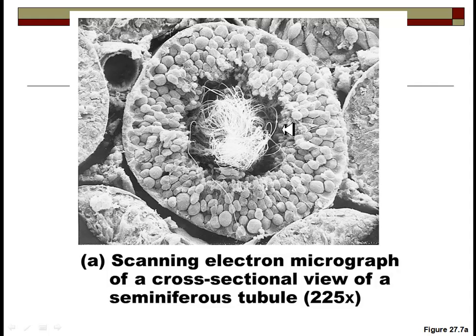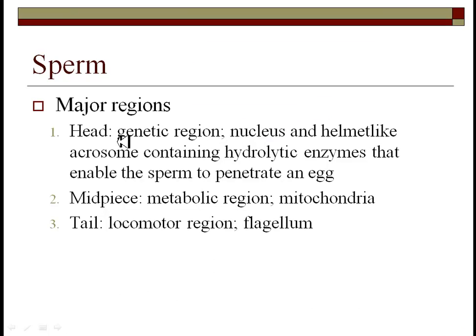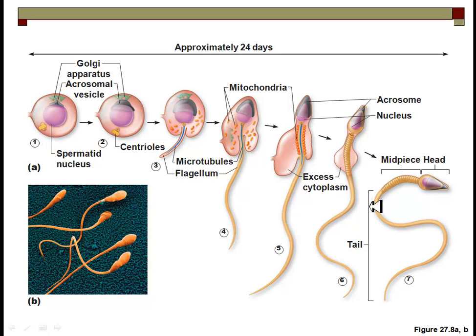The sperm itself is basically a head, a midpiece, and a tail. The head contains the genetic material — the DNA — and an acrosome, which contains the enzymes needed to penetrate the egg. The sperm must break through and digest the zona around the egg, and there are protein receptors that allow egg and sperm to attach to each other. The midpiece contains all the mitochondria, which produce the ATP to power the flagellum used for locomotion.